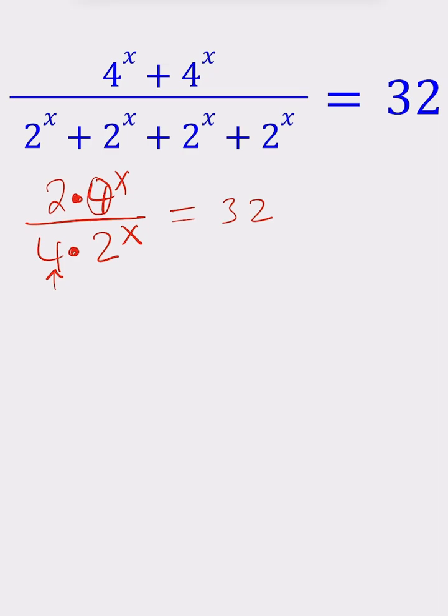You can simplify the 2 and the 4. Two goes into 4 two times. This is 2^1, and now we can write this as 4^x divided by 2^(1+x), because when you multiply powers, you add the exponents.